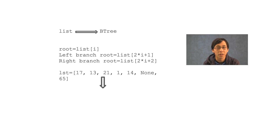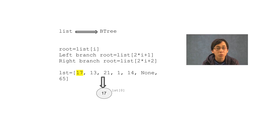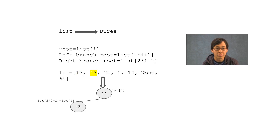The zeroth element is the root. The root of the left branch of the ith element is the 2 times i plus 1 element, and the root of the right branch of the ith element is the 2 times i plus 2 element. The root of this tree is the zeroth element, 17. The root of the left branch is going to be the 2 times 0 plus 1 element of the list, 13. And the root of the right is going to be the 2 times 0 plus 2 element of the list, 21.